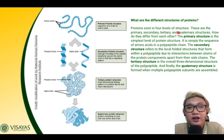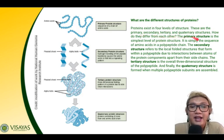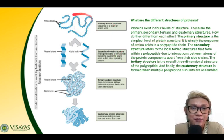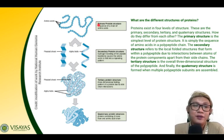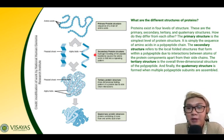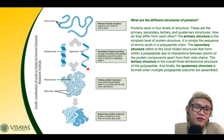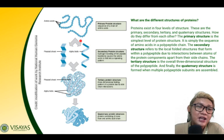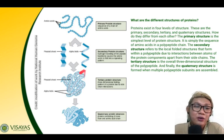Proteins exist in four levels of structure: primary, secondary, tertiary, and quaternary. The primary structure is the simplest level, formed upon translation of messenger RNA after transcription. This primary structure undergoes protein folding to form the secondary structure — either alpha helices or beta-pleated sheets. These then aggregate to form the tertiary structure within one chain, which may contain both alpha helices and beta sheets depending on the amino acid sequence.